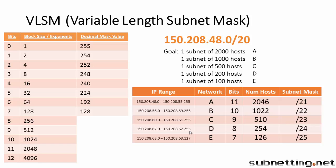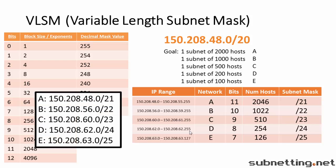Now that we've finished filling out our chart, we can write down our answer. Each network begins at the starting IP and has a subnet mask as shown. So 48.0 slash 21. The next one is 56.0 slash 22. And the last one would be 63.0 slash 25. This is our final answer.